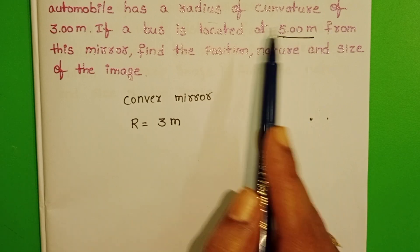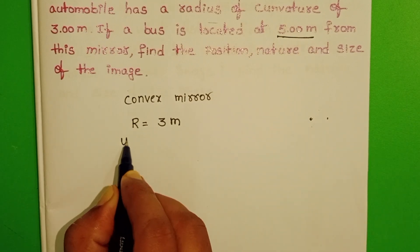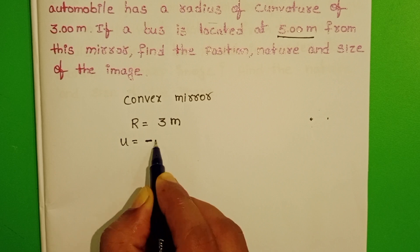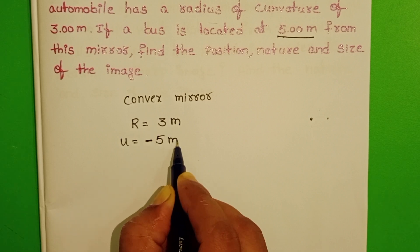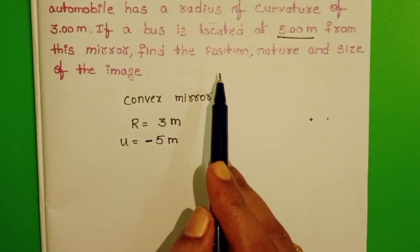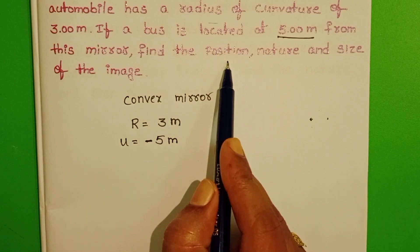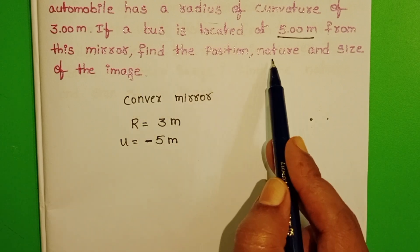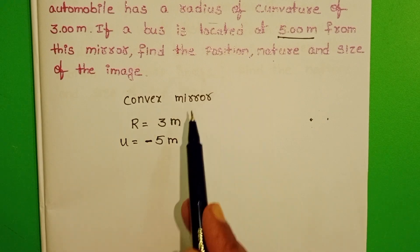Here bus is the object. Object distance is negative. U equals minus 5 meters. We have to find out the position of the image formed by the mirror, as well as the nature and size of the image.